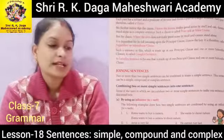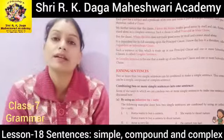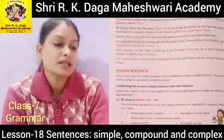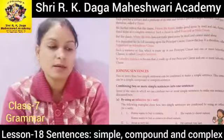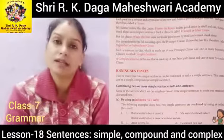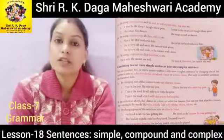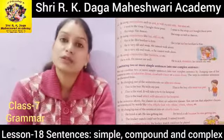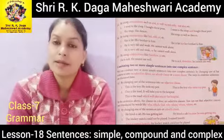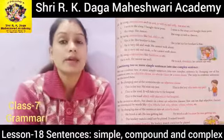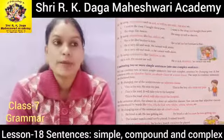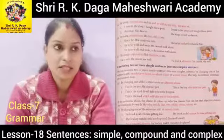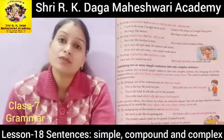Combining two or more simple sentences into compound sentences: by using conjunctions such as 'and,' 'as well as,' 'not only but also,' etc. For example: 'I went to the shop. I bought the pens.' Also: 'She sings. She dances.' Combined: 'She sings as well as dances.'